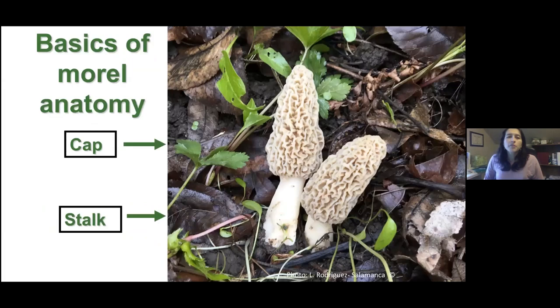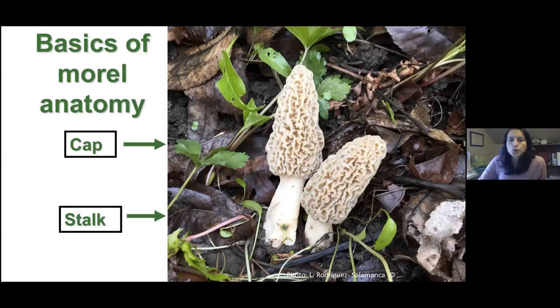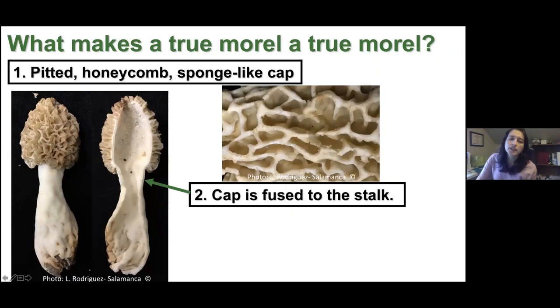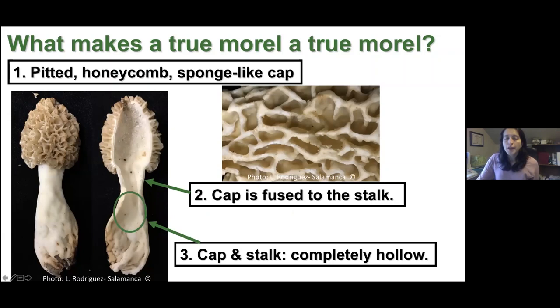What are the basics of morel anatomy? We have a cap and a stem. What makes a true morel a true morel? The first characteristic is a pitted, honeycomb, sponge-like cap. The second is that the cap is fused to the stalk — the stem attaches to the cap right at the bottom. And third, both cap and stalk are completely hollow. That is very, very important.